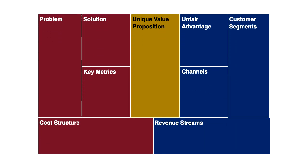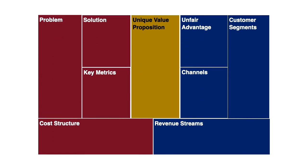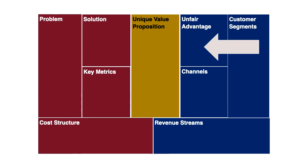Next, explain your business model in detail. Most pitches are three to ten minutes long, so you don't have a lot of time, but this is your opportunity to explain exactly how your business will make money. You'll want to describe your different revenue streams and the different channels you'll use to reach your target customers. Also, be sure to describe your unfair advantage — think of this as your competitive edge. Identify the competition and explain why and how your product or service will outperform theirs in the marketplace.